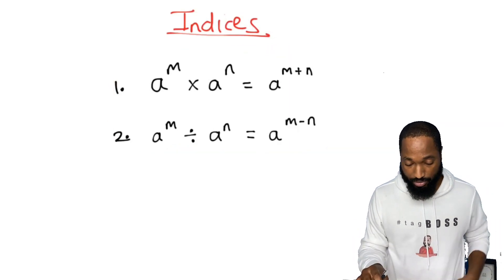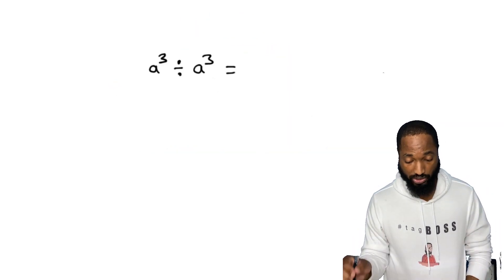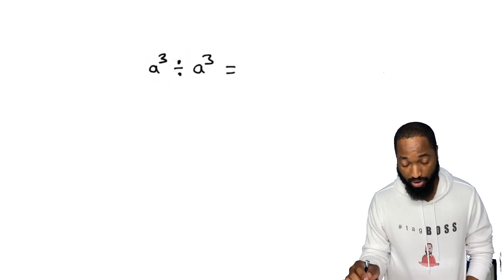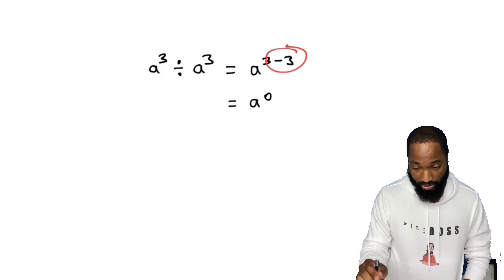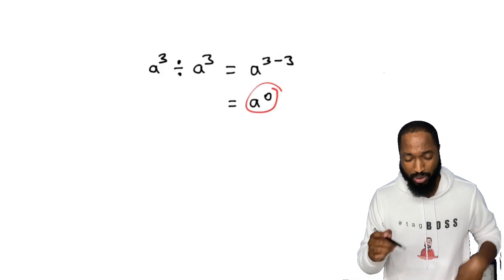Now watch this: a to the power of three divided by a to the power of three. You do your thing, you subtract the power, so you get a to the power of zero.